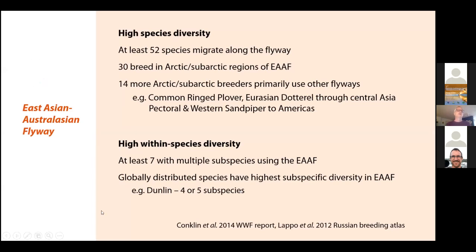There are 52 species migrating along the flyway at least, and this doesn't even count short-distance migrants within a region. I'm going to be talking mostly about arctic and subarctic breeding birds. Of those 52 species, 30 breed in the arctic and subarctic regions of the flyway, and if you consider birds that breed in those areas but mainly migrate on different flyways, there's another 14 species.